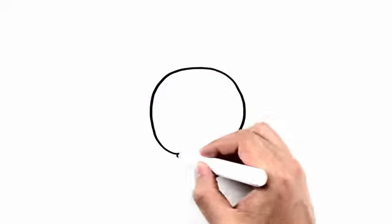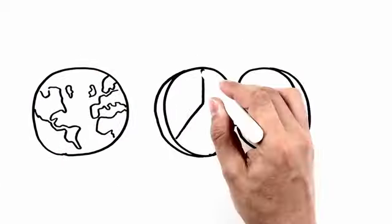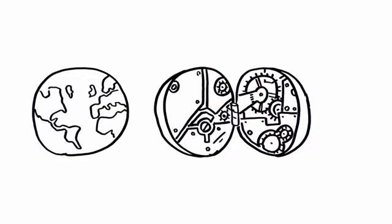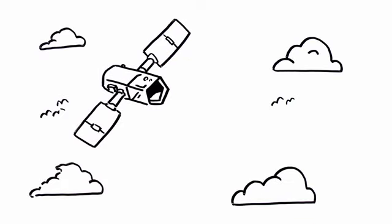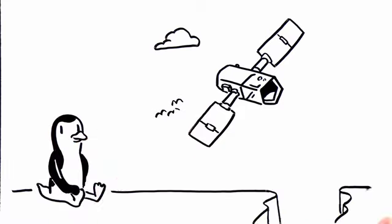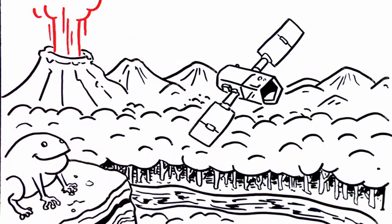And one way to do that is to keep track of what's happening to our planet, so we can understand how it works. The atmosphere, the water, the ice, the land, and all living things.